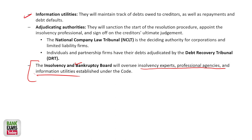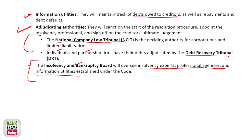Information utilities maintain the track of debts owed to creditors — they maintain the records. Adjudicating authorities: NCLT is there for companies, and the Debt Recovery Tribunal is there for individuals and partnership firms. National Company Law Tribunal is there. I hope that is clear — I explained everything in very easy language.